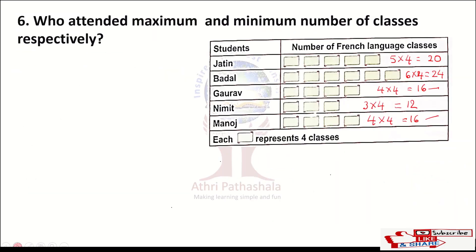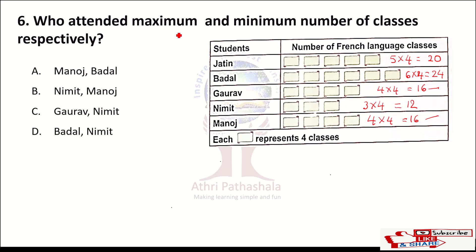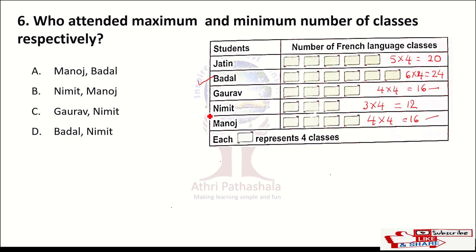Question number 6: who attended the maximum and minimum number of classes respectively? The maximum is 24 classes — that is Badal. The minimum is 12 classes — that is Nimith. So Badal and Nimith, Option D, is the correct answer.